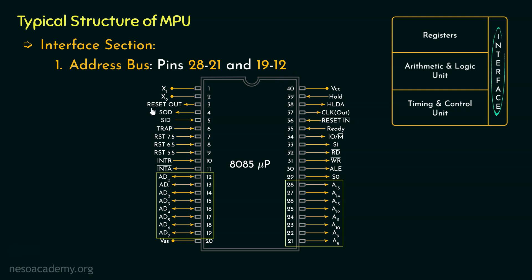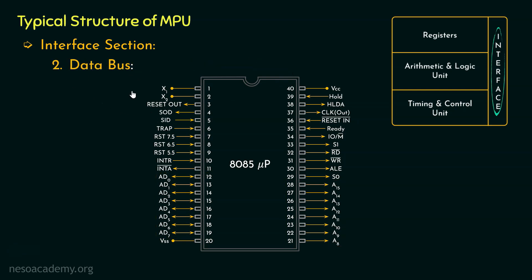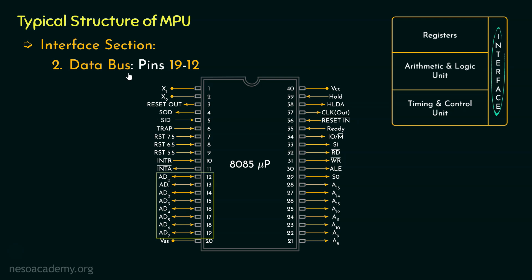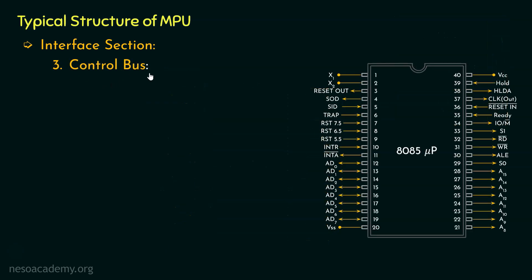The next component of the interface section is the Data Bus. The Data Bus for the 8085 microprocessor consists of the pins from 19 to 12, that is D7 to D0. We already know why the Data Bus is used — these pins are used in order to communicate with either the memory or the input-output devices via the input-output ports. After the Data Bus, the final component of the interface section is the Control Bus.